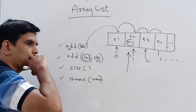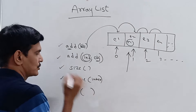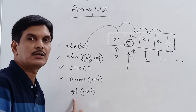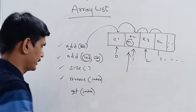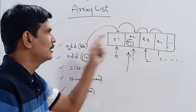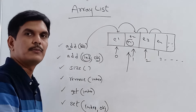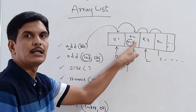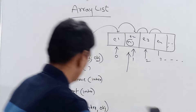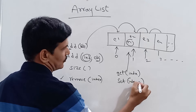The get(index) method retrieves an object or element from the ArrayList at the specified index. The set(index, object) method replaces an existing element at the given index with a new element or object.